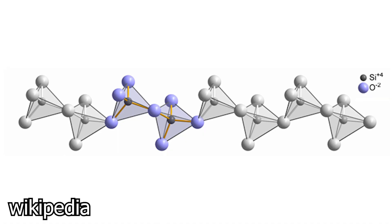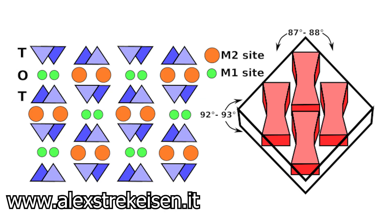Pyroxenes are silicate minerals with a chain of two silicon and six oxygen atoms, along with various metals like aluminium, iron, magnesium, calcium, and sodium, just to name some of the common ones. Because of this structure, pyroxenes are also known as the chain silicates.